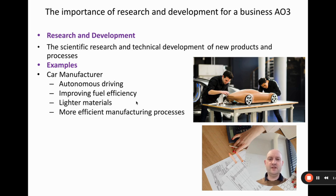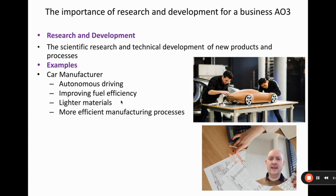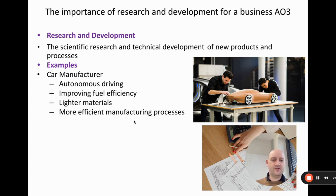Another area is improving fuel efficiency — for petrol engines, so that cars become more efficient and use less fuel, making consumers more likely to buy them. There are also lighter materials for cars, which again reduces fuel use. And then more efficient manufacturing processes — this is where the definition mentions new processes, not just new products. If they develop more efficient ways of manufacturing, costs of production go down and it makes the business more profitable.